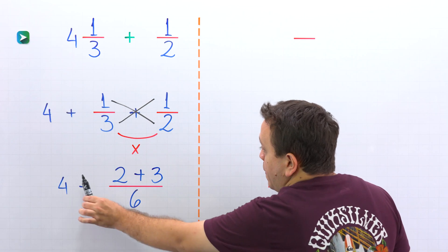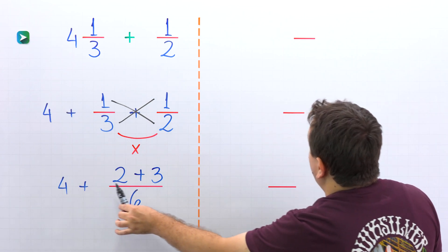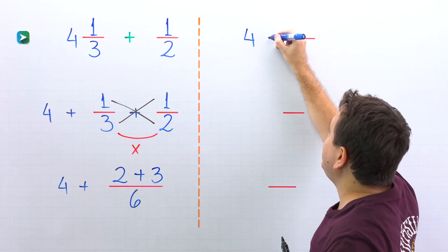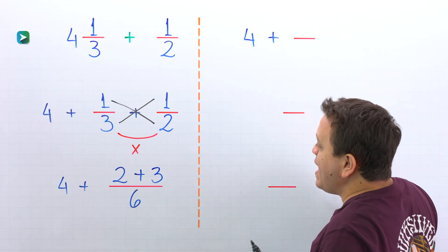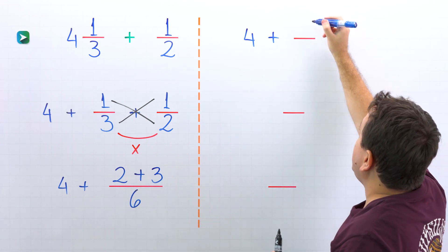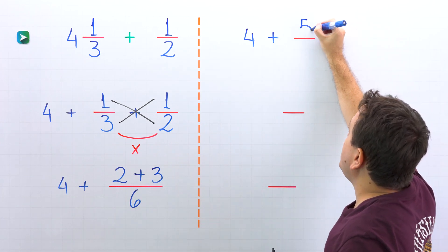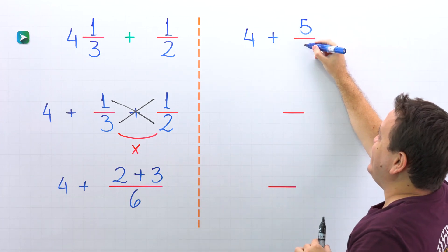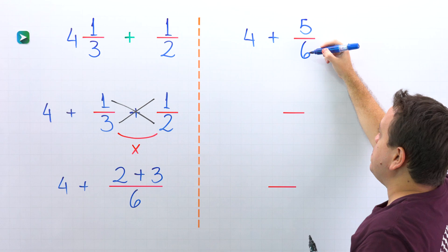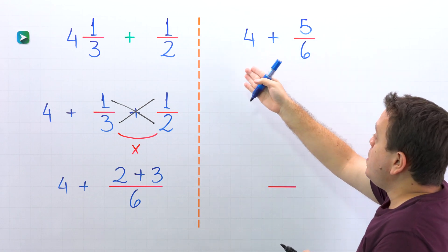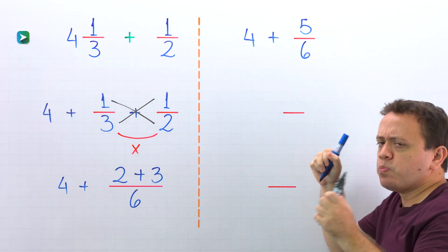That is correct! So we have 4 plus 2 plus 3, which gives us 5. The denominator stays the same — 6. Here, we have the sum of a whole number and a proper fraction.